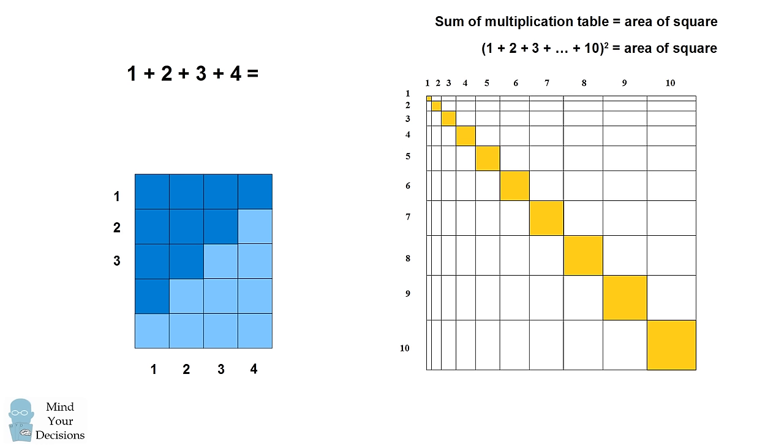So now we've created a rectangle, which has one side length, one side of 4, and another side of 5. So the sum of the numbers will be half of this rectangle. So the sum from 1 to 4 is half of a rectangle with sides 4 and 5. So this will be 4 times 5 divided by 2, which is 10.